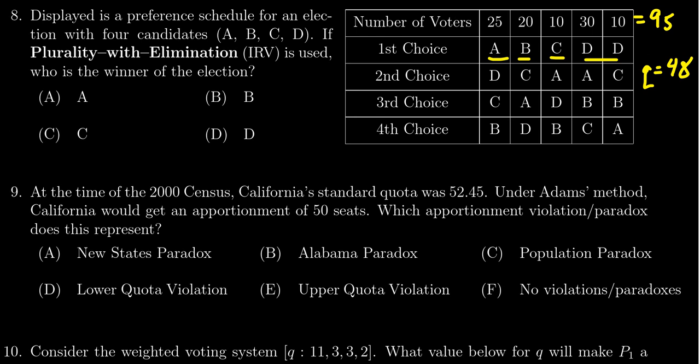Looking at the first-place votes: A has 25, B has 20, C has 10, D has 40 votes — that's close but not enough to meet the quota of 48. So there is no winner so far, and we're going to remove the player with the least number of first-place votes, which would be player C.